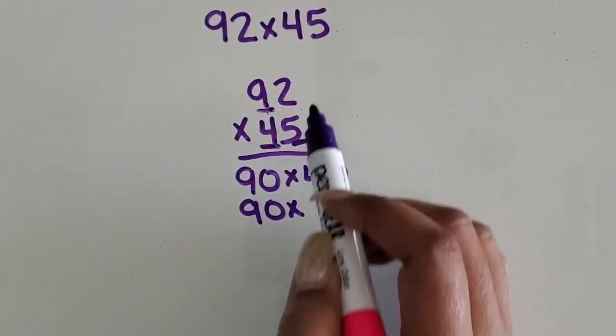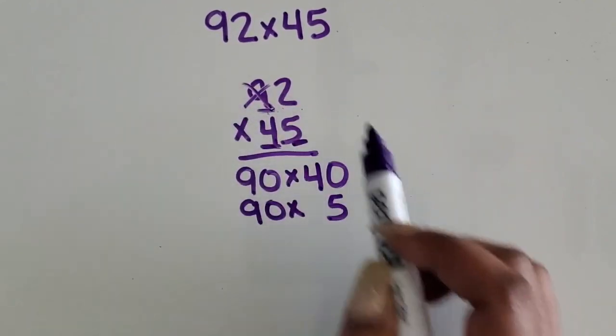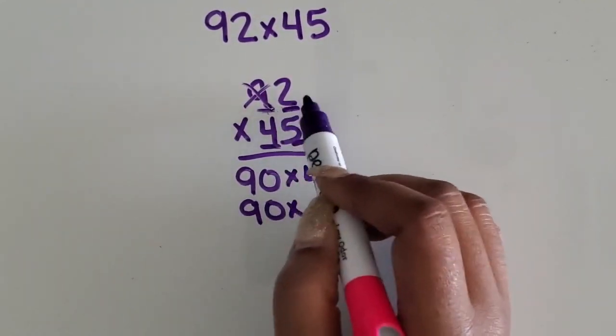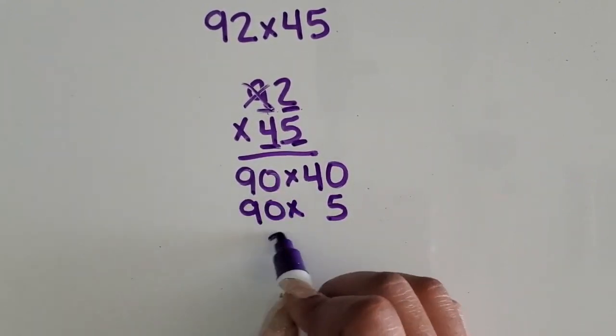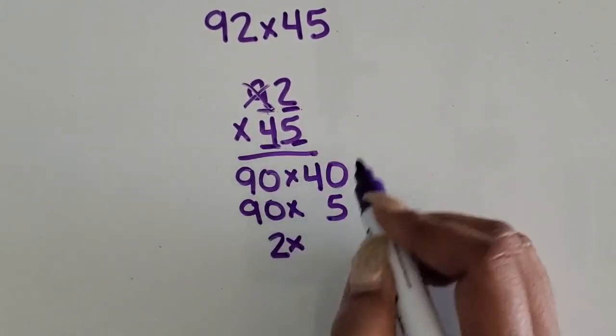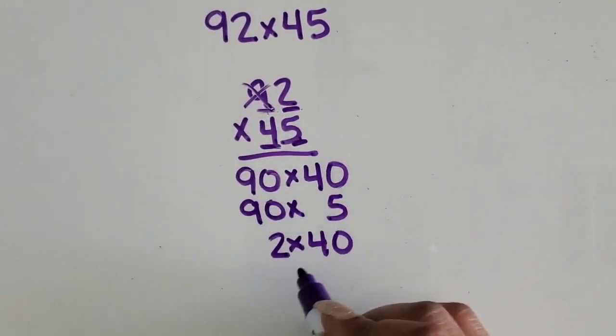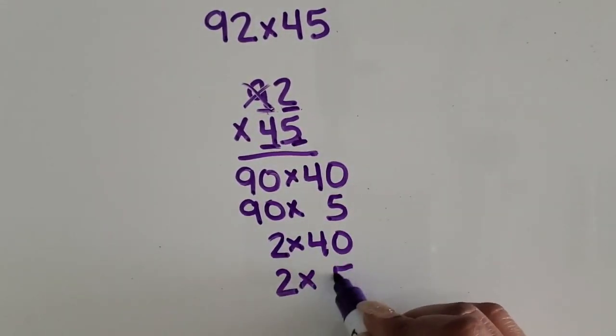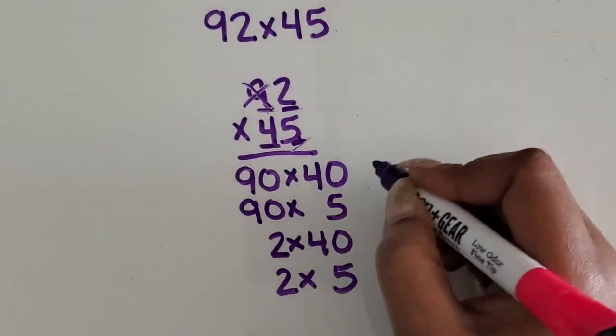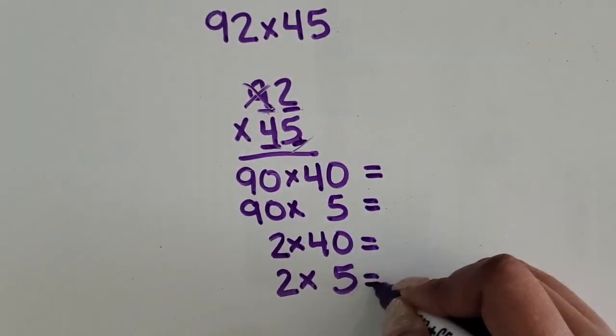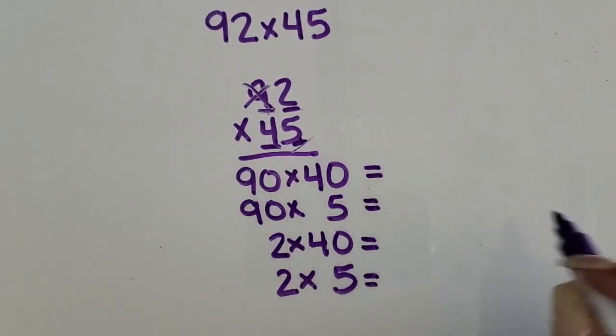So I use the 90. Now I'm finished with that. I need to use the ones place, that two from 92. So two times 40, and then two times five. Then next, they should solve each equation to find the partial products.